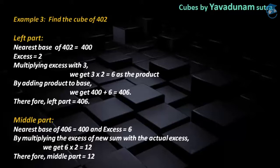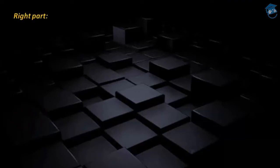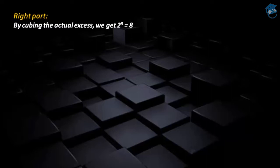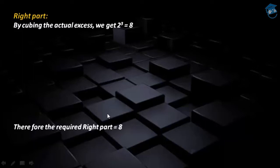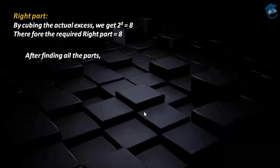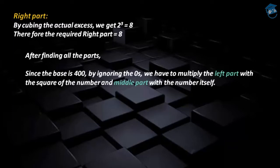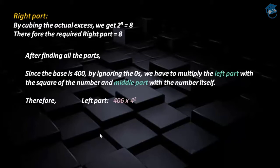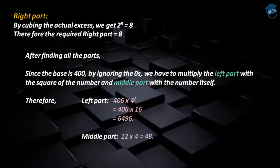After finding the left part and the middle part, now moving to the process of the right part. We have to take the base, which is 400, and ignore the zeros — then we get the number 4. We have to multiply the square of 4 to the left part and 4 to the middle part. Therefore, the left part becomes 406 × 4², which is 406 × 16, equal to 6496. For the middle part, 12 × 4 gives a product of 48.